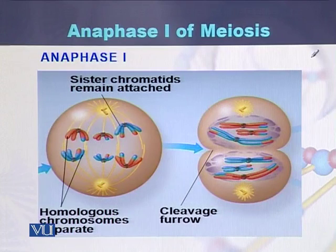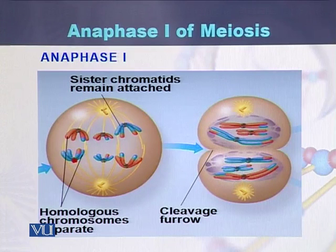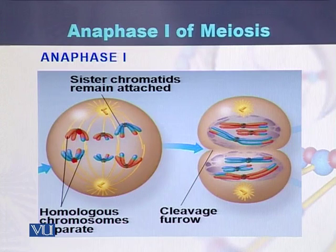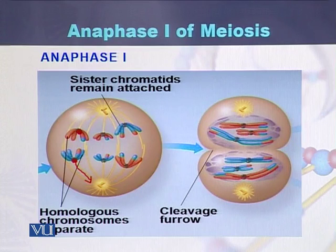In this diagram, the chromosomes are moving towards the poles. Here we can see the centromere of the homologous chromosome. This chromosome consists of two strands called sister chromatids and is moving towards one of the poles, while the second chromosome, which also contains two sister chromatids, is moving towards the other pole.